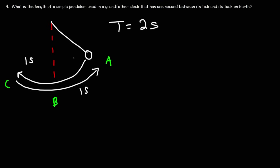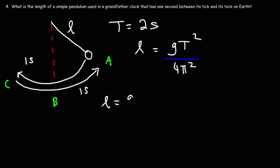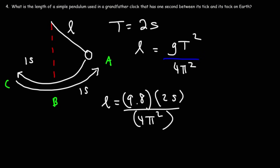With a period of two seconds, we use L = G·T² / (4π²). On Earth, G = 9.8, T = 2 seconds: L = 9.8 × (2)² / (4π²). Don't forget to square the period. The answer is L = 0.993 meters — that is the length of the grandfather clock's pendulum.